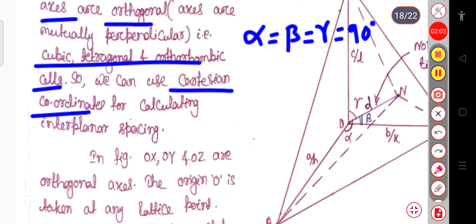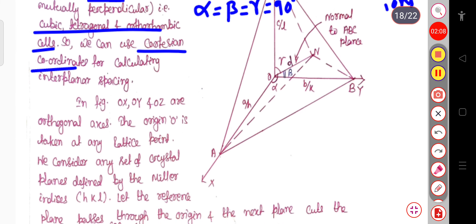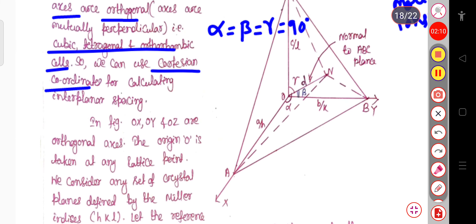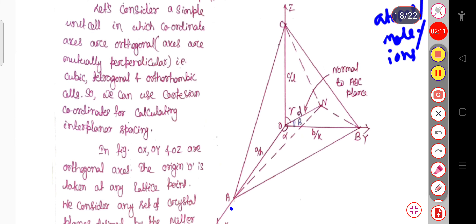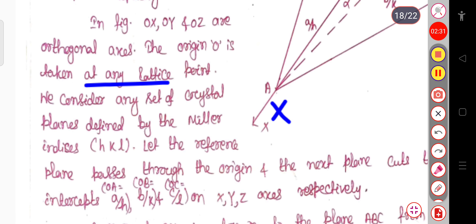We will use this Cartesian coordinate system to calculate the interplanar spacing. Let us consider: this one is the x-axis, this one is the y-axis, and this is my z-axis. OX, OY, and OZ are orthogonal axes and the origin is O, taken at any lattice point. We consider any set of crystal planes defined by the Miller indices h, k, l.